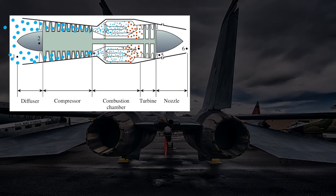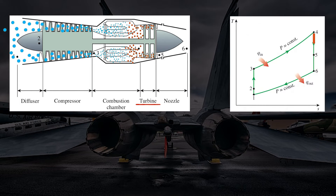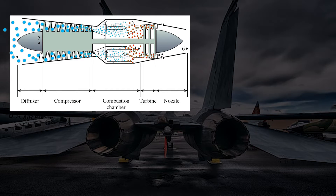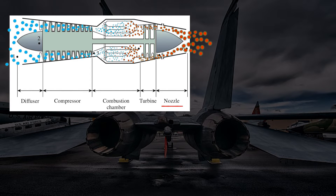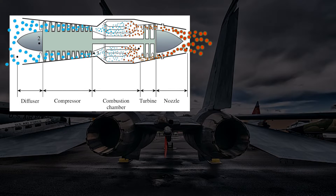Afterwards, the hot high-pressure fluid enters the turbine and undergoes an isentropic expansion. The expanded product exits the turbine and passes through a nozzle, where it gets accelerated. Finally, the exhaust gases are pushed out with a high velocity.